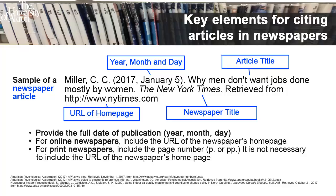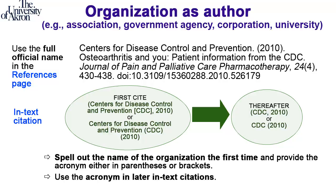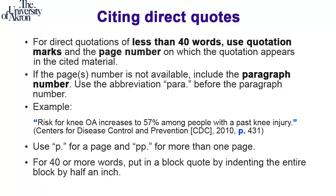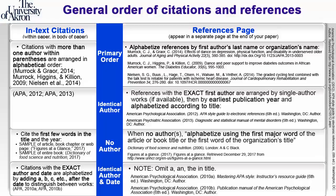With a few exceptions, make sure that every source cited in the text is also cited in the references page. For groups, spell out the name of the group in the first in-text citation, then use the acronym in later citations. When quoting fewer than 40 words in the text, use quotation marks and provide the page number. Remember that in-text citations should match the references on the references page. One exception is personal communications, which are cited in the text only.